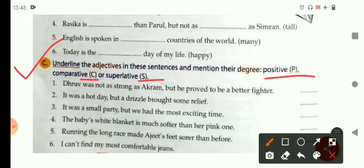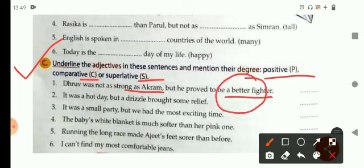So, Dhruv was not as strong as Akram, but he proved to be a better fighter. So, better word tells you, it's a comparative degree. So, here children, you will write C for comparative.